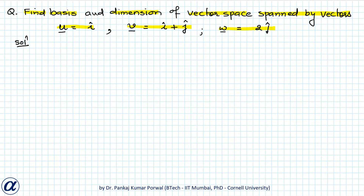Note that the dimension of the vector space will be the smallest number of linearly independent vectors in our vector space that span our vector space. And because our vector space is spanned by vectors u, v, and w, the number of linearly independent vectors will equal the number of linearly independent vectors among u, v, and w.